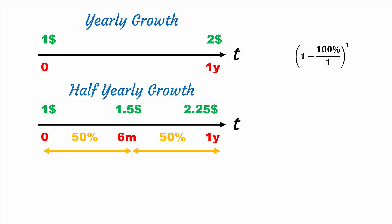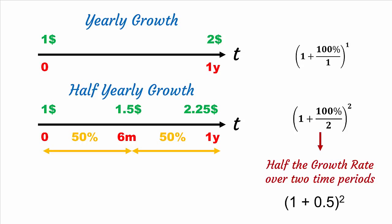The formula on the right side can be used to divide the time interval into many small intervals. The half-yearly formula shows half the growth rate over two time periods. This means 100 divided by 2 is 50% of 1, which is 0.5.